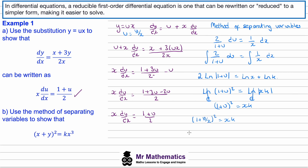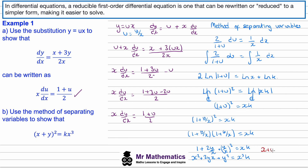Expanding the bracket: 1 plus y/x multiplied by itself gives 1 plus 2y/x plus (y/x) squared. Multiplying everything by x squared gives x squared plus 2yx plus y squared equals x cubed times k. Factorising the left side as a quadratic gives (x plus y) squared equals kx cubed, which is what we were asked to find.